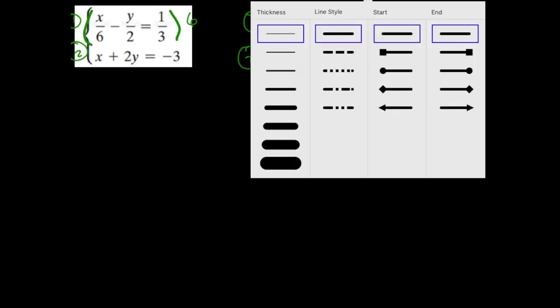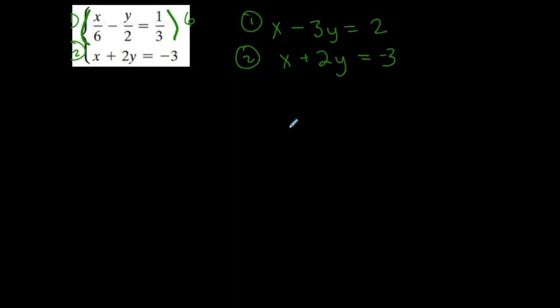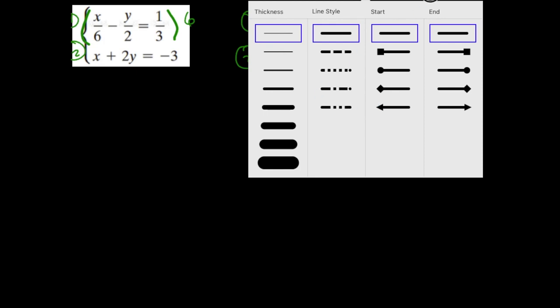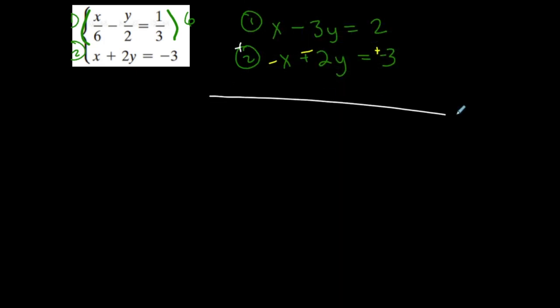The only thing that I need to do, though, is first decide which variable I'm going to eliminate. And obviously, x would be the easiest because I already have the coefficients in front of them the same. I just need opposite numbers. So I'm going to multiply everything here by negative 1, which changes all those signs. And then now when I add the two equations together, x minus x is 0. That goes negative 3y minus 2y is negative 5y. 2 plus 3 is 5. This now simplifies to an equation of 1 variable. And I get negative 1 for y.